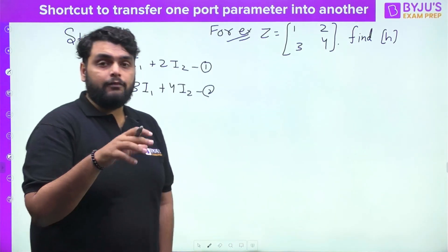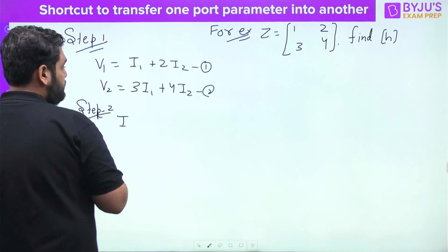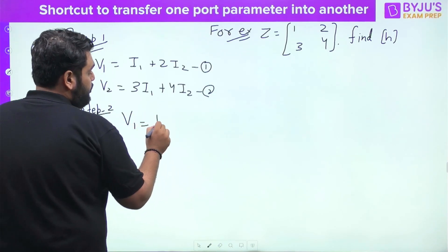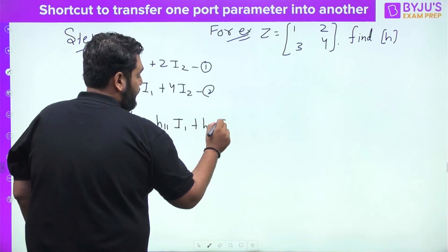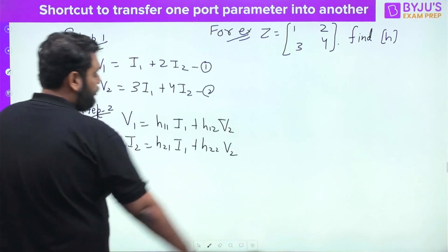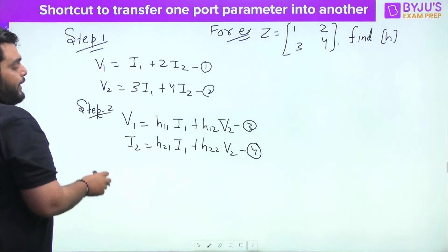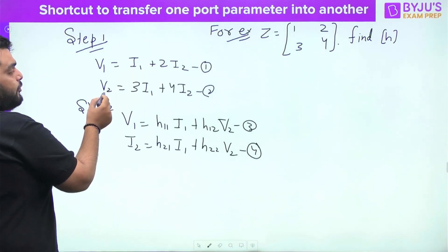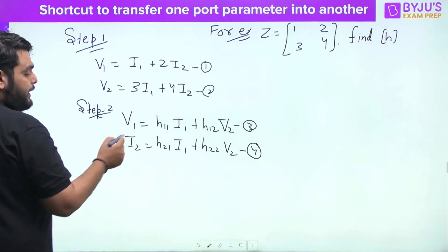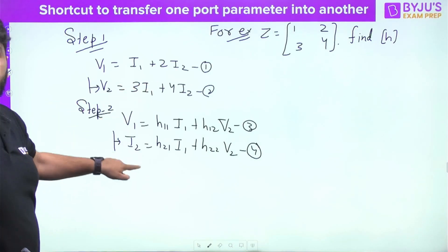Step two: write down the general equation for the parameter you need to find — here that is H. The general H parameter equations are: V1 = h11·I1 + h12·V2, and I2 = h21·I1 + h22·V2. Now you need to check which equation is common between equations 1 and 2 (Z form) and equations 3 and 4 (H form). Equation 4 involves I2, I1, and V2, which matches the variables in equation 2.